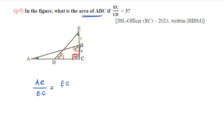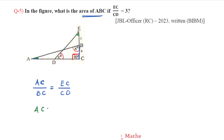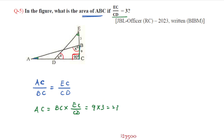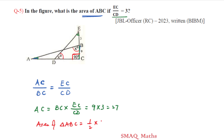Using the similar triangles, EC by BC is one-third (opposite relationship), so BC equals 9. Then AC equals BC multiplied by EC/CD, which is 9 into 3 equals 27. The area of triangle ABC equals half into base into height, which is half into 9 into 27.